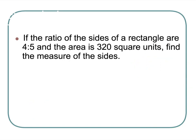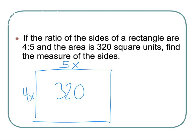Oh my goodness, a ratio problem. Who would have thought? We've never seen one of those. Oh wait, we have. The ratio of the sides of a rectangle are four to five. And the area is 320 square units. Find the measure of the sides. I've got the area. I want to find the measure of the sides. Well, ratio problems. I'm always jotting down an x with it. So 4x and 5x, 320 square units. Okay.